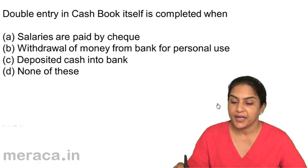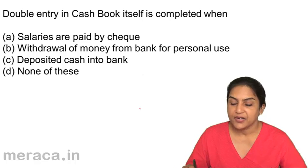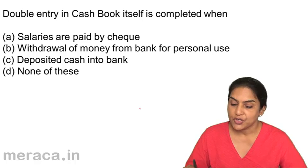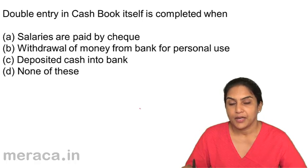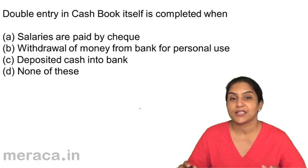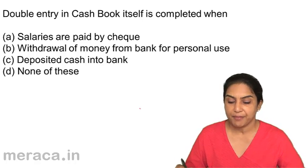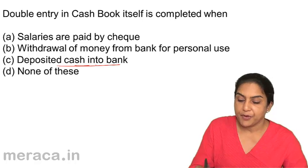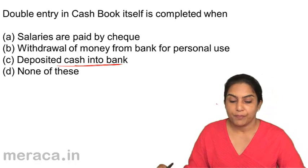Question 5: Double entry in the cash book itself is completed when — A: salaries are paid by check, B: withdrawal of money from bank for personal use, C: cash deposited into bank, D: none of these. Double entry in the cash book is completed when there is a transaction involving both cash and bank. So the correct answer is C, cash deposited into bank.